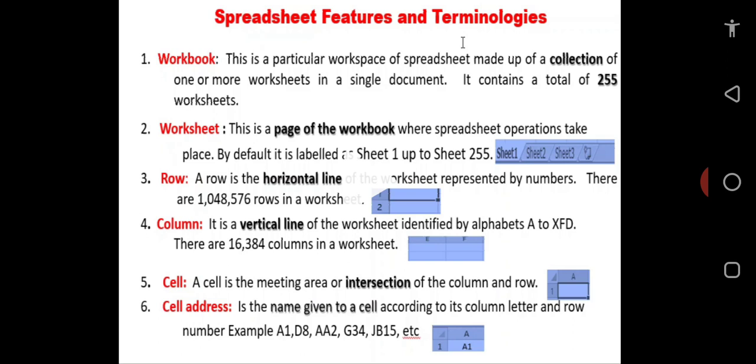Number three, the row. A row is the horizontal line of the worksheet represented by numbers. In spreadsheet, we have a total of 1,048,576 rows in each worksheet. To view this number of rows as the last row, you simply go to your keyboard, hold down your Ctrl key and press the down arrow key.